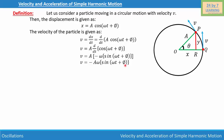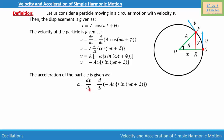Now let's find the acceleration of the moving particle. Acceleration a = dv/dt, so we differentiate the velocity again. Since −Aω is constant, we take it out and differentiate sin(ωt + φ). The derivative of sin(ωt + φ) is cos(ωt + φ) times ω, giving a = −Aω² cos(ωt + φ).